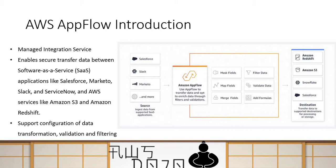These validations are also at an initial stage — there are about four types of validations possible at this point, but those features will be enriched in coming days. Finally, we have filtering, whose purpose is to let you create conditions to filter down the source data when moving it through AppFlow. That's how AppFlow works, and today we are going to use it to move data from Salesforce to S3.